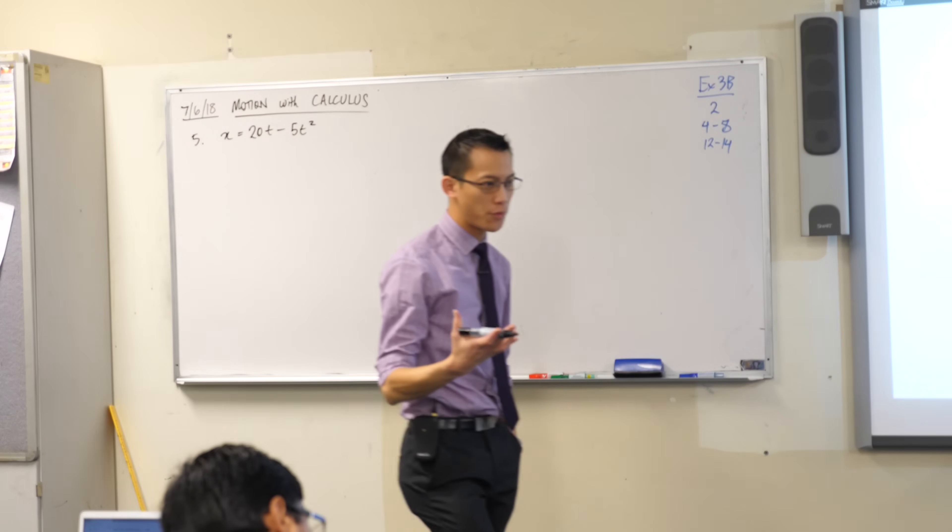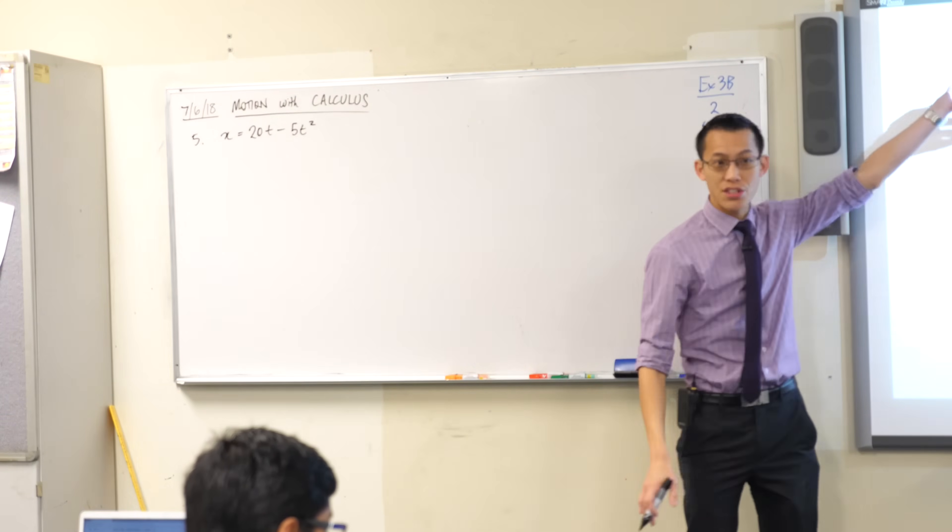It's in the family of quadratic functions. This is worth writing down by the way. So we've got x equals 20t minus 5t squared. Now we mentioned before, I mentioned before, we were going to look at projectile motion later on. This is a projectile.